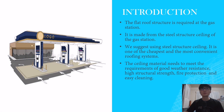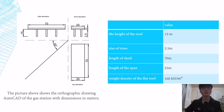Good morning and good evening to Dr. Hilton. My name is Lau Chen Ping. I will present the alternative method solution and the recommendation of the flat roof. The flat roof is made of the sealed structure ceiling because it is the cheapest and most convenient roofing system. The flat roof is required to have good weather resistance, high structural strength, fire protection, and easy cleaning. This picture shows the orthographic drawing of the gate station with measurements, and the values of the height of the roof, thrust, length of the span, and density of the flat roof.